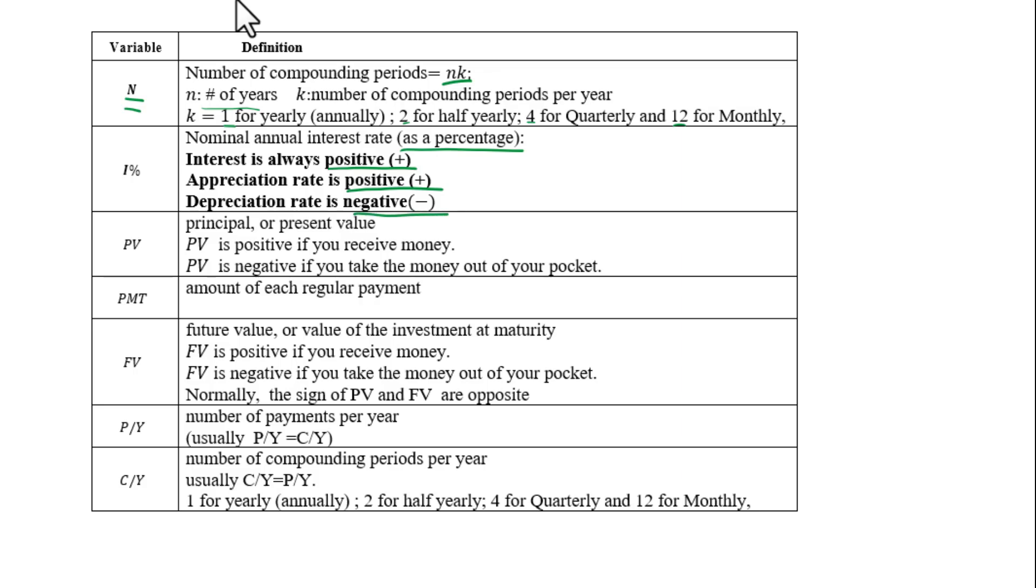PV means principal or present value. PV is positive if you receive money. PV is negative if you take the money out of your pocket.